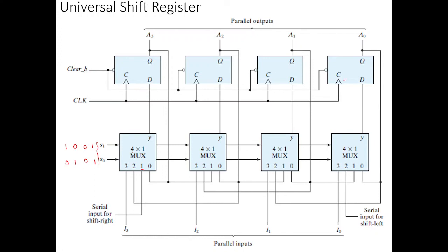We can clear the flip-flop content to 0. We can retain the information by supplying 0, 0 for the select lines. When we supply 1, 1 for the select lines, we can parallel load the flip-flops from the external input. When we supply 0, 1 for S1 and S0 respectively, we perform shift-right. Finally, when we supply 1, 0 for S1 and S0, we perform left-shift operation.